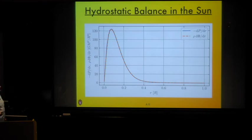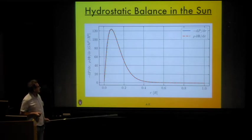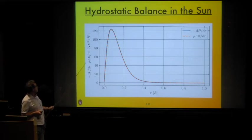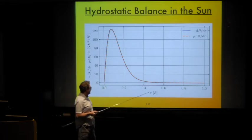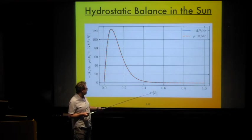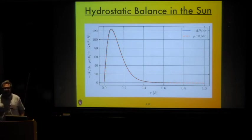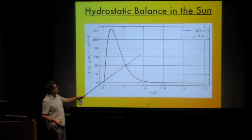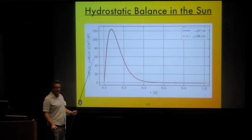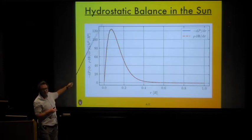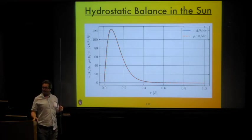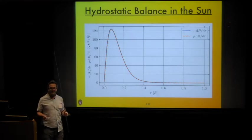This is what hydrostatic balance actually looks like in the Sun — from a model of the present-day Sun. I'm plotting the pressure gradient dP/dr together with the term ρ dΦ/dr as a function of radius, expressed in units of the Sun's total radius of about 7×10^10 cm. The blue line and dotted orange line lie nicely on top of each other, which tells us our model for the Sun is in hydrostatic equilibrium. The pressure gradient vanishes at the center of the star, rises to a large peak about 10% away from the center where self-gravity is strongest, and then drops down to a small value at the surface.